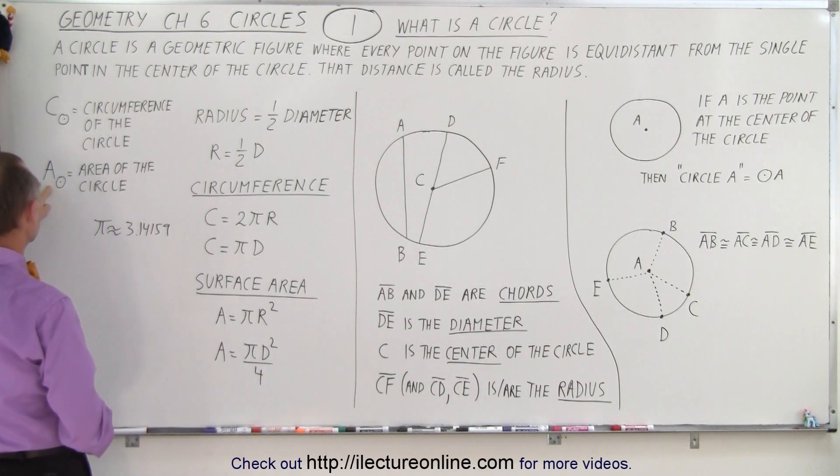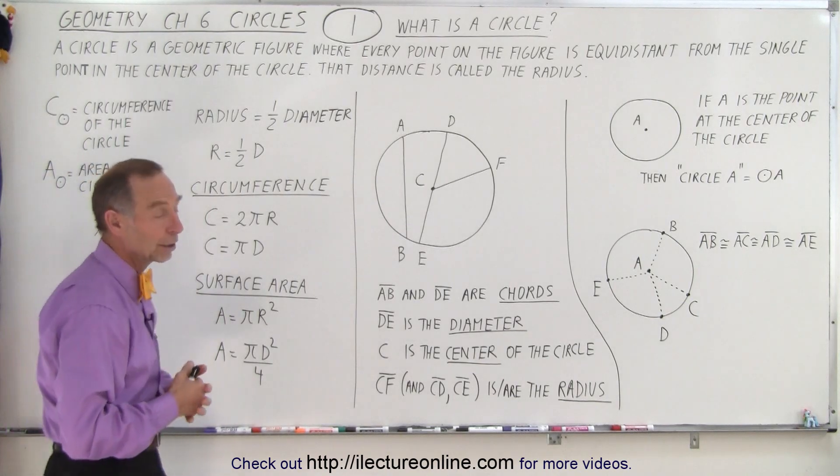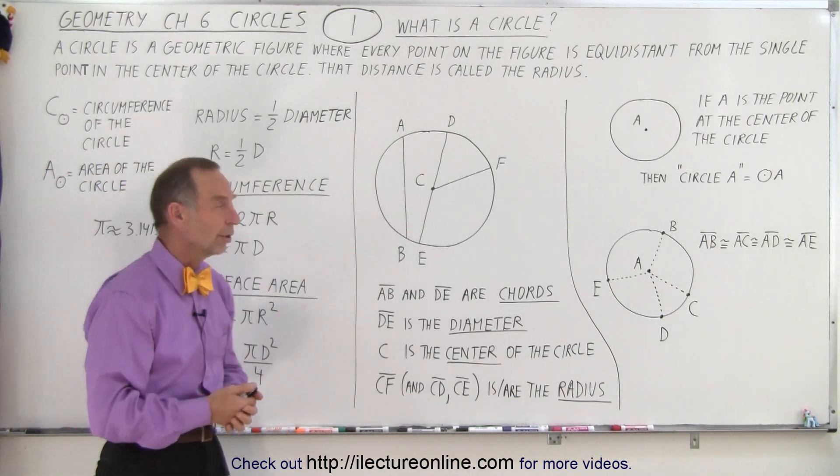We sometimes can also write this as the circumference of a circle, or the area of a circle, and that's another way in which we can define the characteristics or the naming convention dealing with circles.